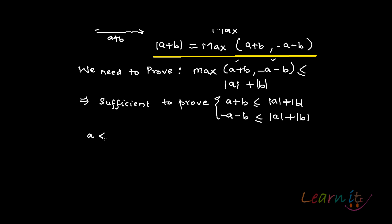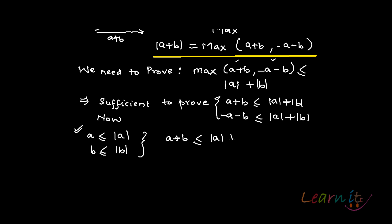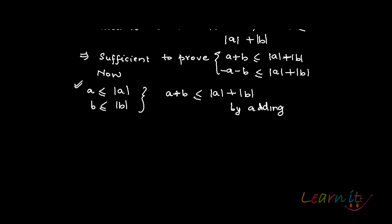Now, A is less than or equal to the absolute value of A — this is the fourth property we have seen. Similarly, B is less than or equal to the absolute value of B. These two things together — by adding them — give us that A plus B is less than or equal to |A| plus |B|, since the left-hand side is still less than or equal to the combined right-hand side.